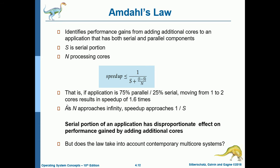Next is Amdahl's Law, which identifies performance gains from adding additional cores to an application that has both serial and parallel components. S is the serial portion and N is the number of processing cores. For example, if an application is 75% parallel and 25% serial — 0.75 plus 0.25 equals 1 — moving from 1 to 2 cores results in a speed up of 1.6 times.